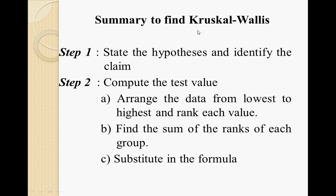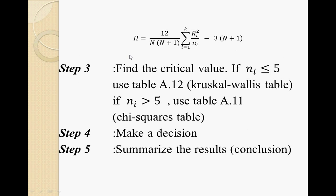Here is the five-step summary for the Kruskal-Wallis test. Step 1: State the hypothesis and identify the claim, whether it is H0 or H1. Step 2: Compute the test value — arrange the data from lowest to highest, rank each value, find the sum of ranks for each group, and substitute into formula 6.2. Step 3: Find the critical value using table A12 if Ni ≤ 5, or chi-square table A11 if Ni > 5. Step 4: Make a decision to reject or not reject H0. Step 5: Summarize the result.